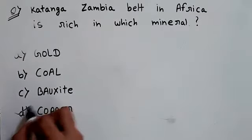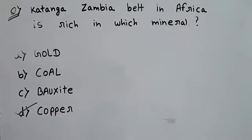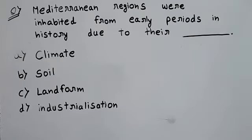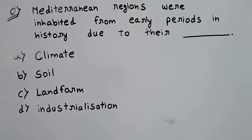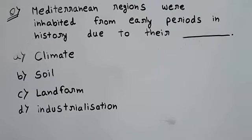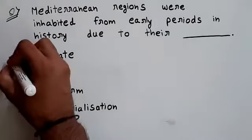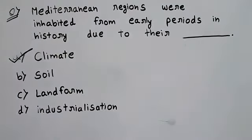The correct answer is option D: copper. The next question is: Mediterranean regions were inhabited from early periods in history due to their — let's read the options yourself. The correct answer is option A: climate.